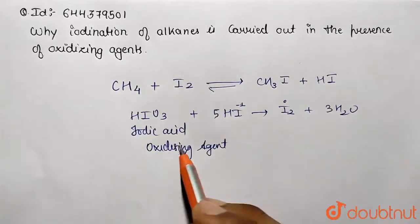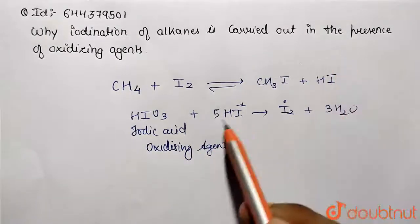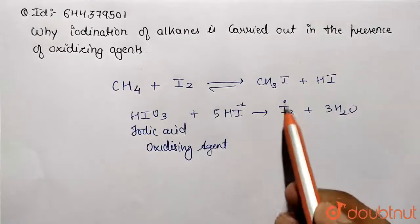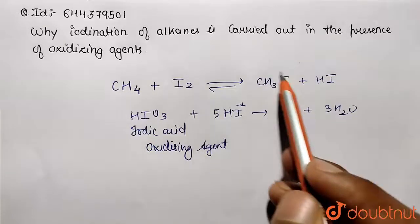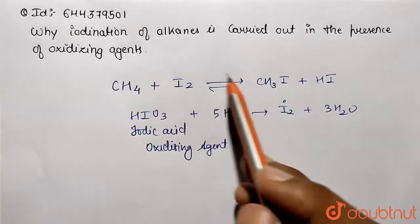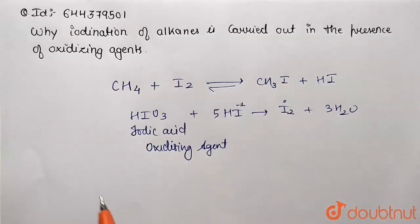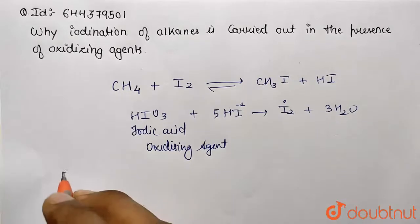So this was the work of the oxidizing agent. It is reducing the HI produced to the corresponding iodine molecule so that our iodination is successful and it is not being backtracked. So this was the solution.